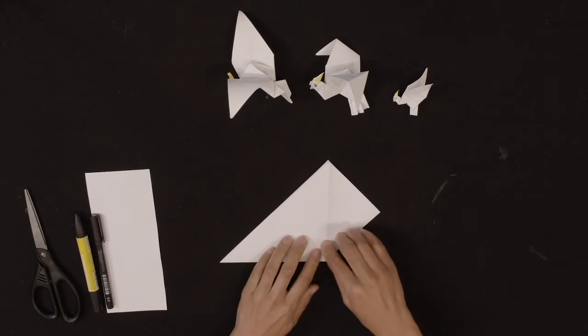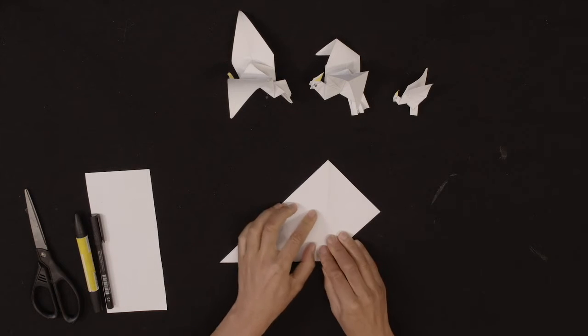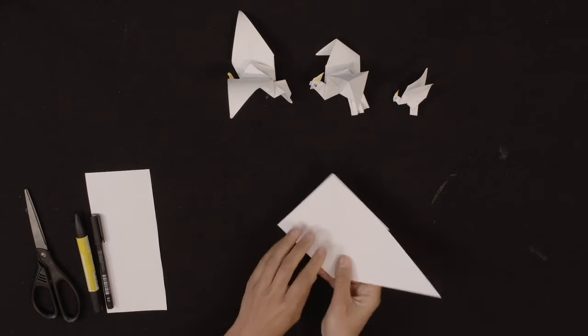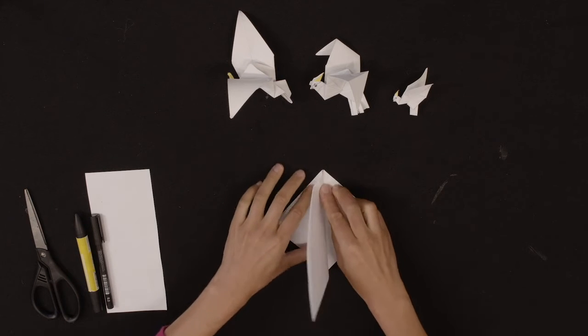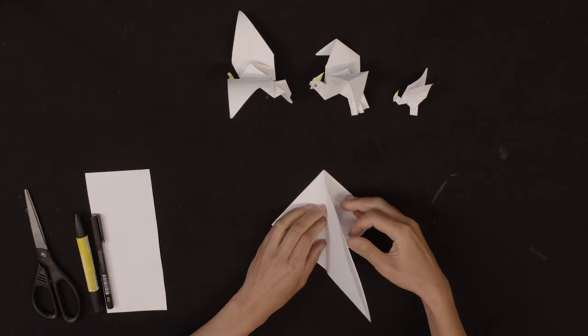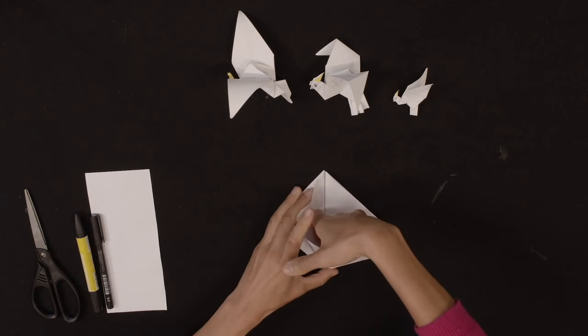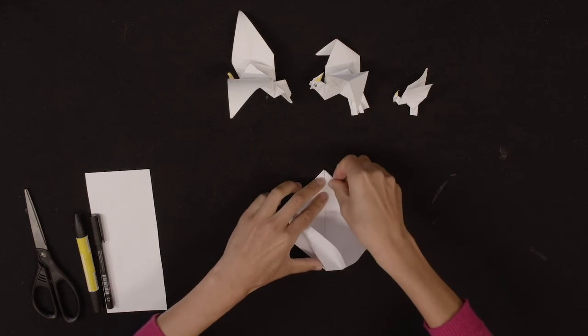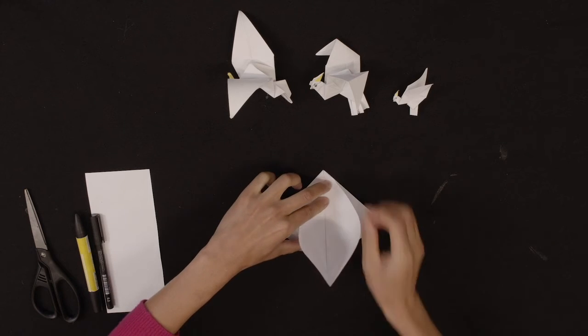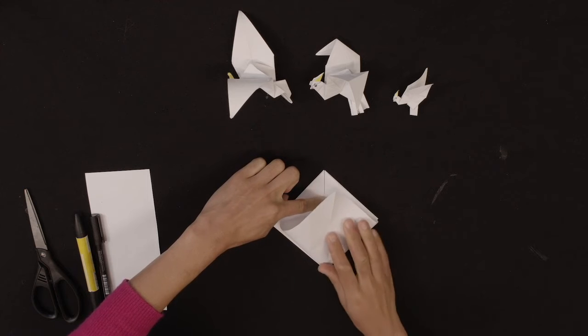And again make sure the fold is really nice and crisp. Turn it around, lift up the triangle, fold it so it turns into a square. Make sure all the folded other parts are still intact where it was before.